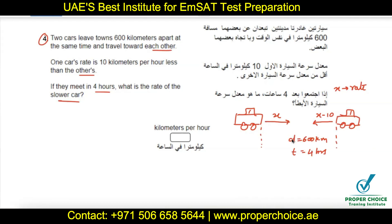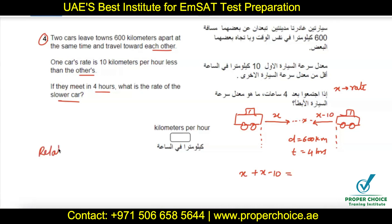When two objects move in opposite directions towards each other, their relative speed is the sum of their individual speeds. So the combined speed equals total distance divided by total time. If they go in the same direction, you subtract their speeds — that is how the relative speed concept works. Since these cars go in opposite directions, we add their speeds: speed of car one plus speed of car two equals distance divided by time.